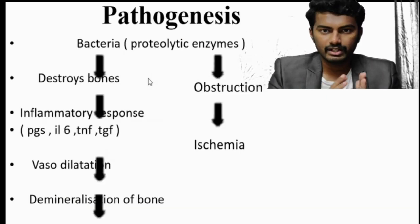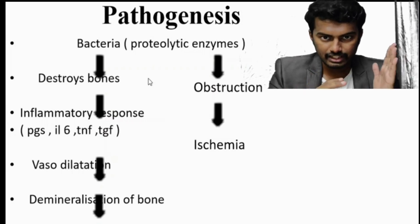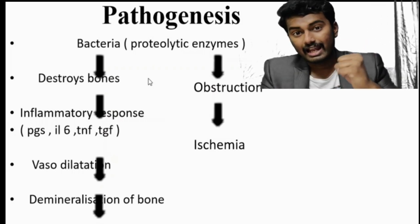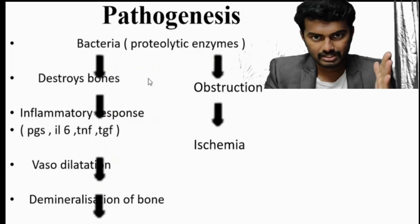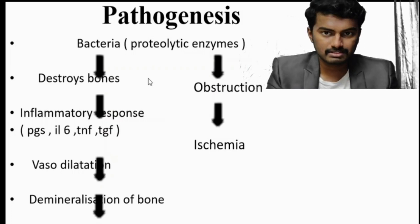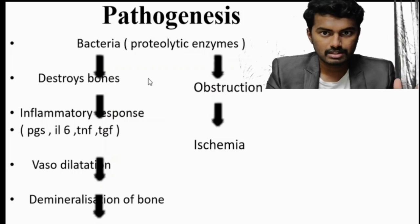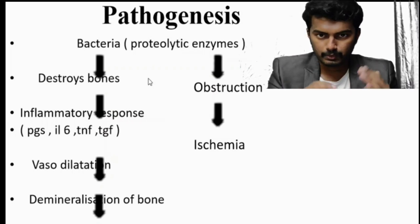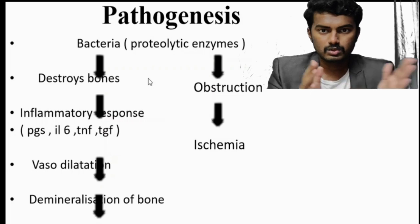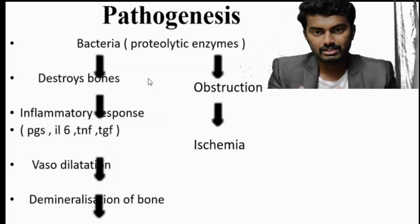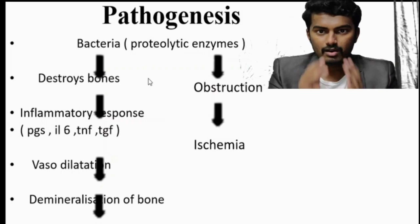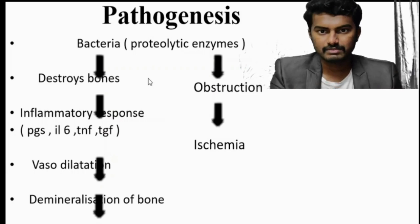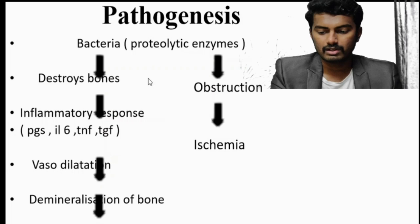In pathogenesis, bacteria lodge in the nutrient artery whose diameter is less than the bacterial size, causing occlusion. Being an end artery, this causes obstruction and ischemia. Additionally, Staphylococcus aureus secretes proteolytic enzymes that destroy bone. The inflammatory response increases edema, which further compromises blood supply — creating a vicious cycle of destruction until the organism is removed. The end result is ischemia to the bone.